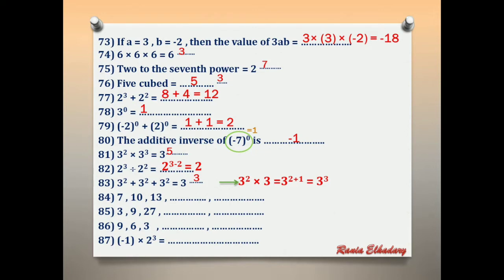Number 84: 7, 10, 13 — the numbers increase by 3. 7+3=10, 10+3=13, 13+3=16, 16+3=19.